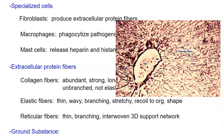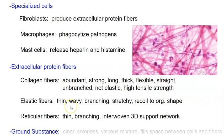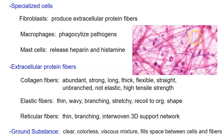We also have reticular fibers. Reticular fibers are highly branching and interwoven — all those dark lines are reticular fibers. This is a picture from the liver. Reticular fibers are less common but very common in places like the liver, spleen, and lymph nodes, providing a support network for other cells. The ground substance of connective tissue is a clear and colorless viscous mixture that fills the spaces between the cells and fibers.